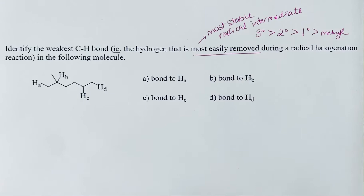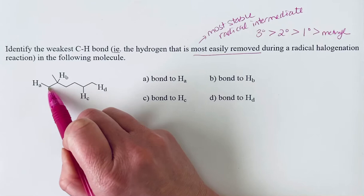And so what we're looking for is a hydrogen on a tertiary carbon. So HA is attached to a primary carbon.